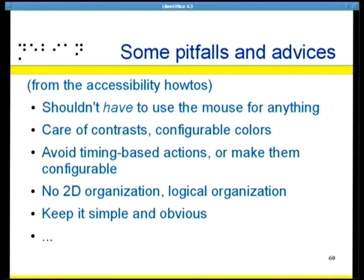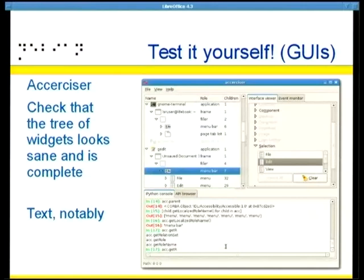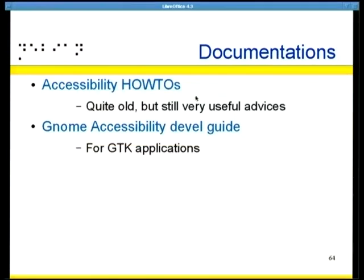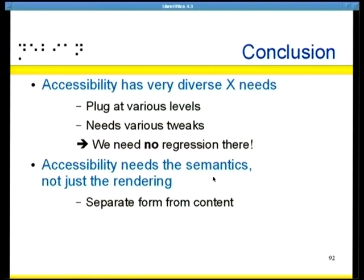There are some pitfalls and tools. You have a tool called Exerciser that lets you check that you actually expose information — you can see all the applications and browse the widget tree to verify you have the actual text. There is also documentation: the accessibility how-tos are quite old but still interesting. GNOME has written a development guide for GTK applications which is quite general but useful.